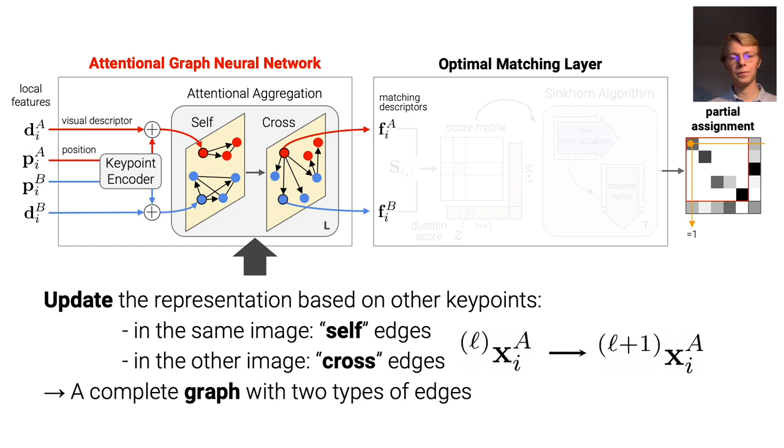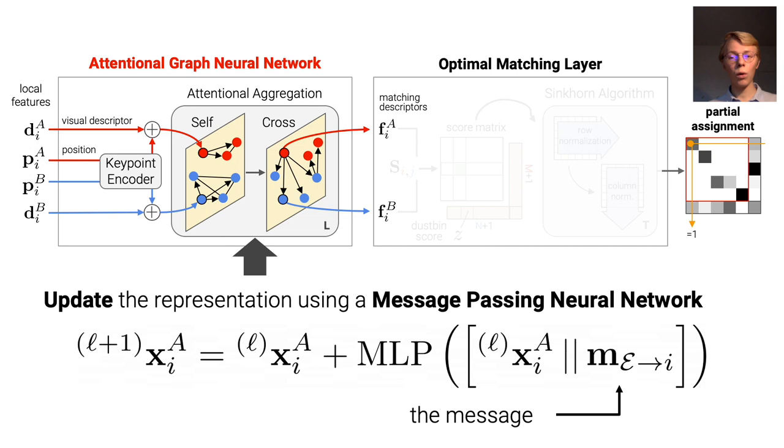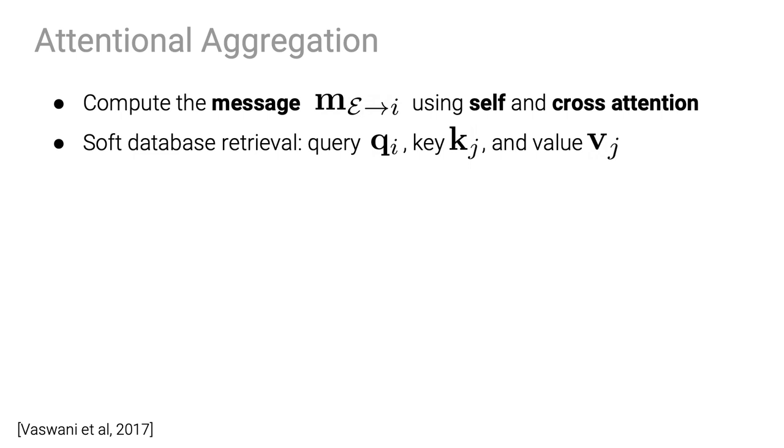We thus use a kind of graph neural network called a message-passing neural network. At each layer, the state of each keypoint is updated using a message computed from the self or the cross-edges. For a given layer, the aggregation along these edges is performed using self or cross-attention. This is akin to a soft database retrieval of values corresponding to entries with keys similar to a given query. It is implemented as the weighted average of the values, with the weights being the similarity between query and keys.